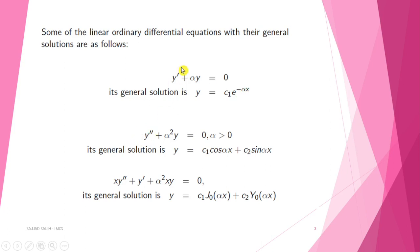Second, y'' + α²y = 0, where α > 0, its general solution is y = c₁cos(αx) + c₂sin(αx).